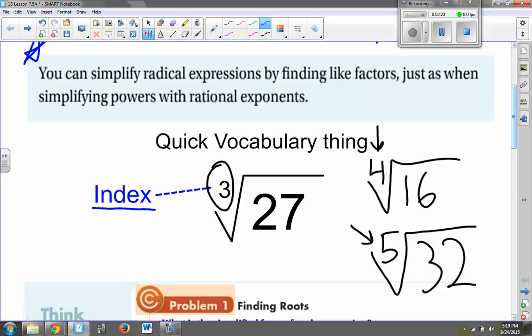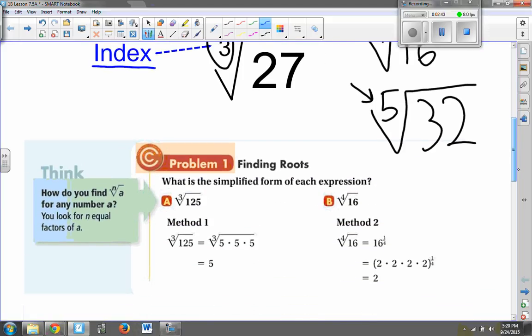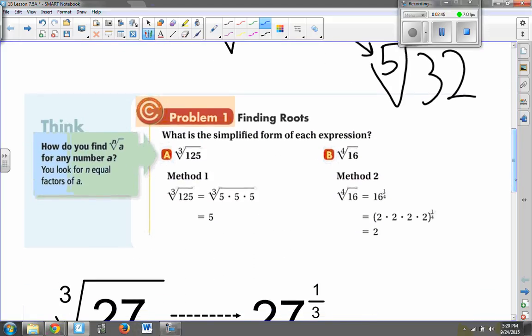Now, what that number tells us is we are looking for a number that, in this case, if we multiply it times itself three times, it should equal 27. So we're looking for a number that if we multiply it by itself three times, we get 27. Here's a couple other examples that I will show you, then I'll have you do a few yourself.